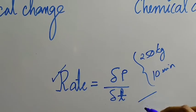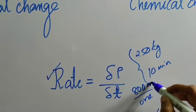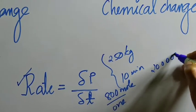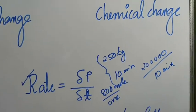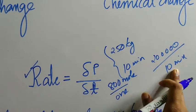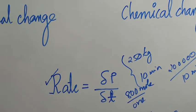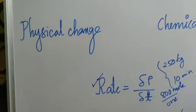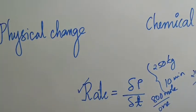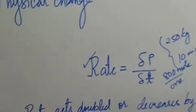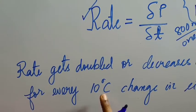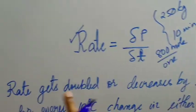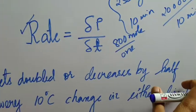Suppose in 1 hour, 800 molecules of a particular product are formed without the presence of an enzyme. And in the presence of an enzyme, 2 lakh molecules are formed in 10 minutes. This is the change that happens in the presence of enzymes versus the absence of enzymes — the rate of the reaction is increased. As with any reaction, reactions are also affected by changes in conditions. For example, if the temperature is increased, with every increase of 10 degrees Celsius, the rate can either get doubled or decrease by half.